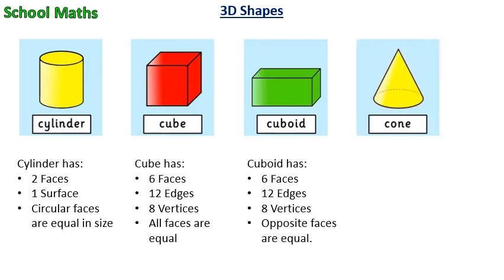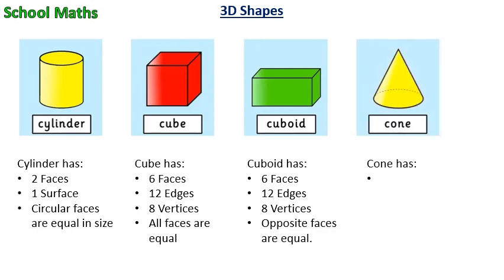This shape is cone. It has 1 face, 1 vertex, 1 curved surface, and having circle at its face.